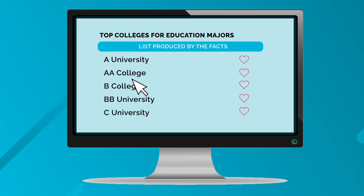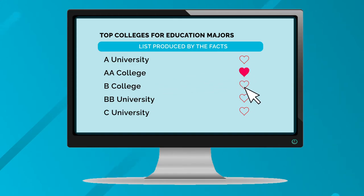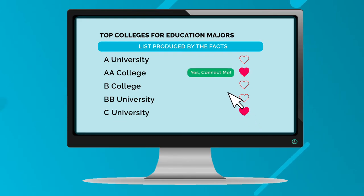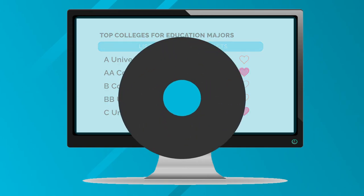Once you've chosen a list, you'll be brought to the actual list of schools. Here you'll be able to favorite any of them to save to your main dashboard for later to continue your college search, or even on some of them you can click the "Yes, connect me" button right away to get information sent to you ASAP.